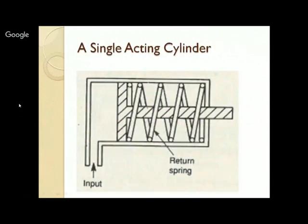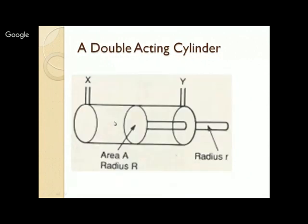A single-acting cylinder has a barrel with a piston and a spring on one side. Pushing air or oil in moves the piston forward; when the fluid is removed, the spring pushes the piston back. A double-acting cylinder has two ports — X and Y. To move the piston forward, fluid is pushed in through X and taken out through Y; to move it backward, fluid is pushed in through Y and taken out through X.